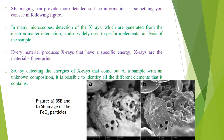Secondary electron imaging can provide more detailed surface information, as seen in the following figure. In many microscopes, detection of X-rays generated from the electron-matter interaction is also widely used to perform elemental analysis of the sample. Every material produces X-rays that have a specific energy — X-rays are the material's fingerprints. By detecting the energies of the X-rays that come out of a sample with an unknown composition, it is possible to identify all the different elements that it contains.